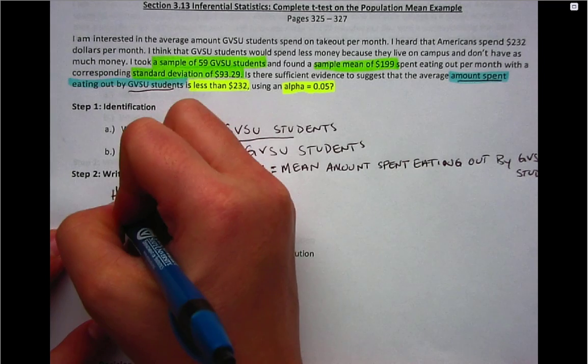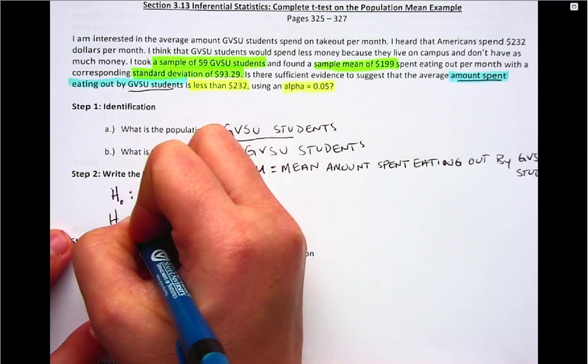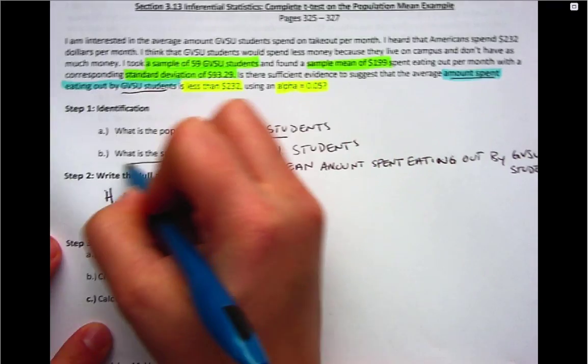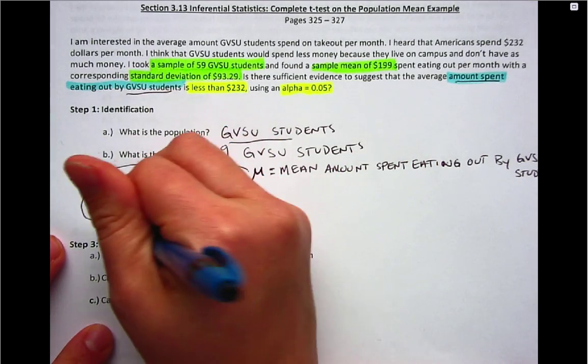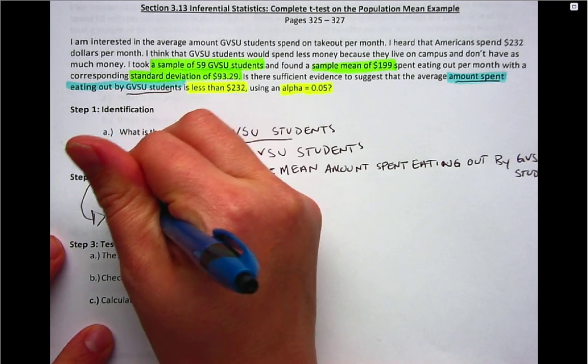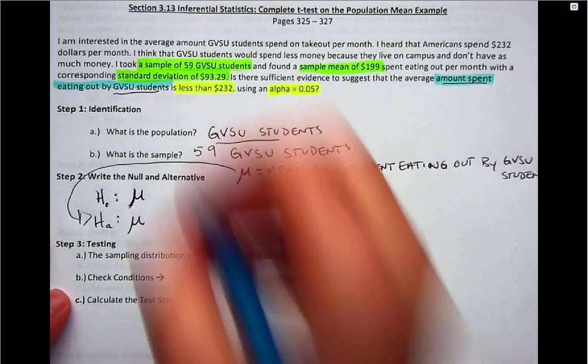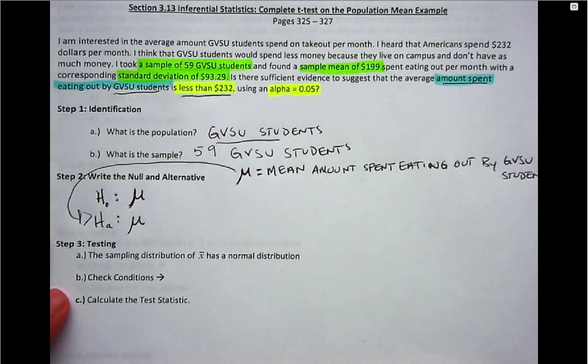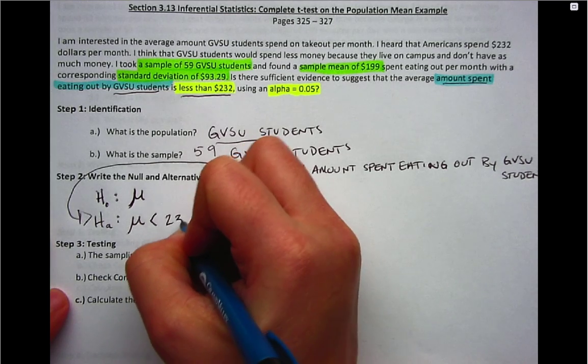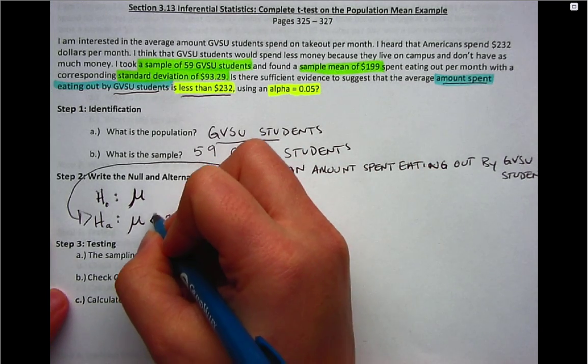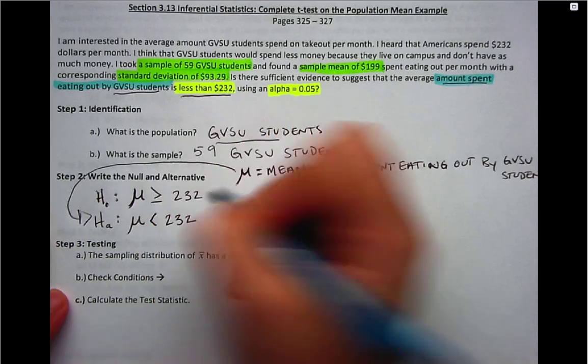Again, that's going to help me make my inference down in step five. Next we'll write our null and alternative. Remember it's capital H sub 0 for the null and capital H sub A for the alternative. I've said also in videos past, whatever the notation is for step one, you'll use that notation again in step two. Another reason why I like to write the parameter definition. Here, because we wanted to show that less than $232 was spent, that's our research hypothesis, or in other words, that's going to be the alternative. So the corresponding null, or the complement to that, would be greater than or equal to, and that's the null hypothesis.